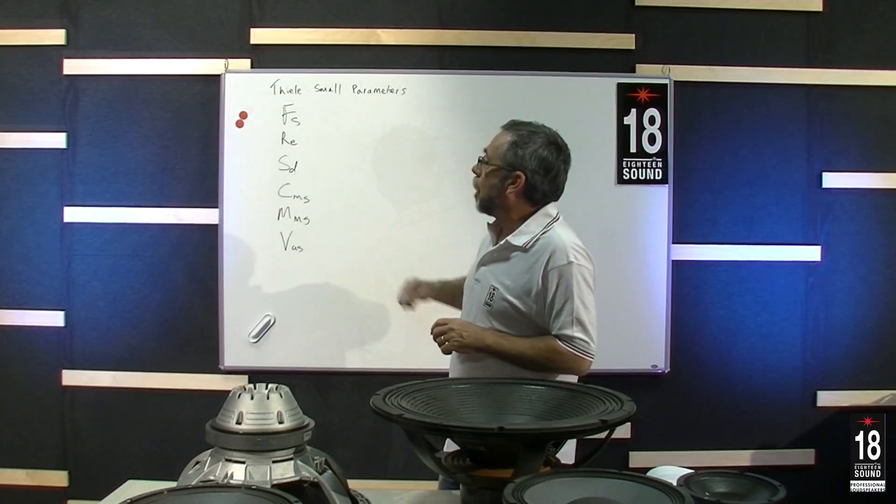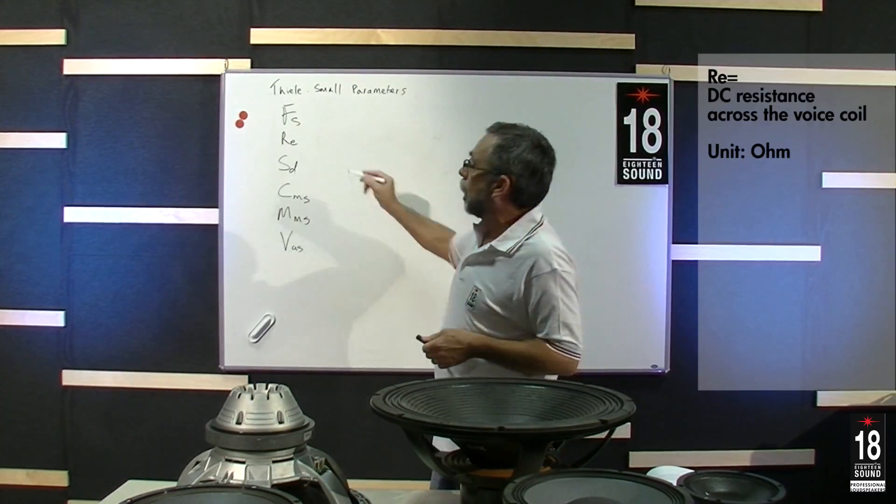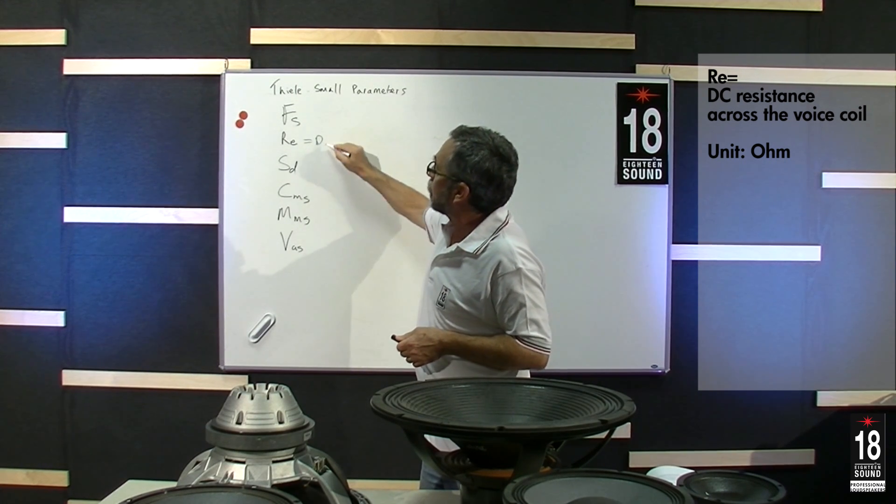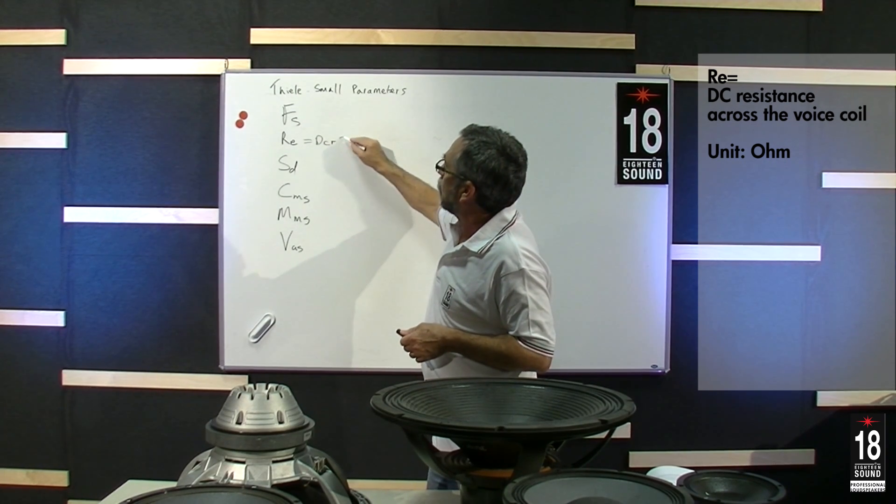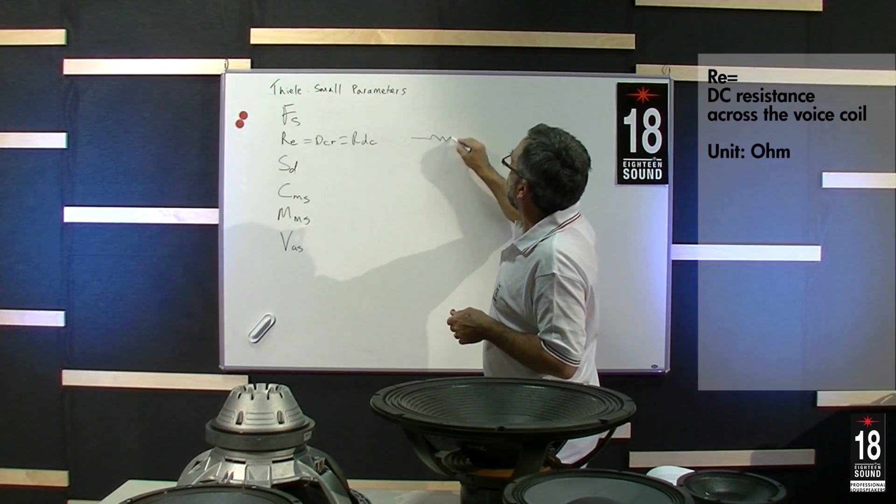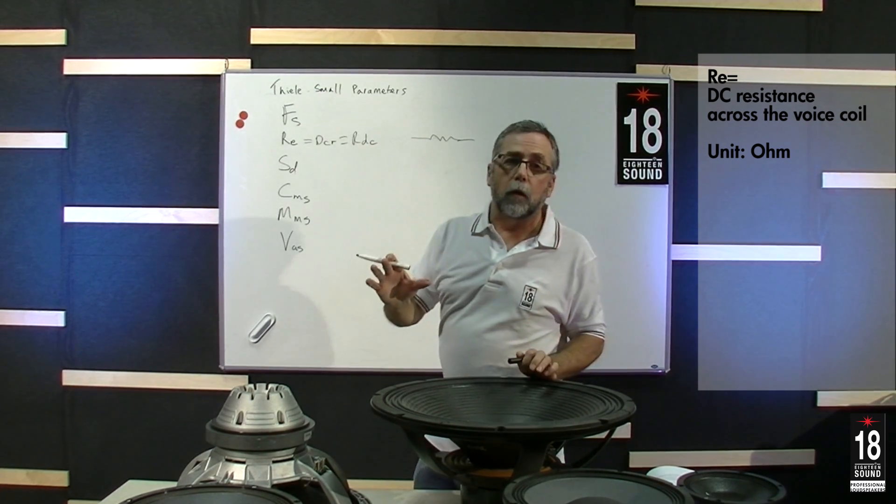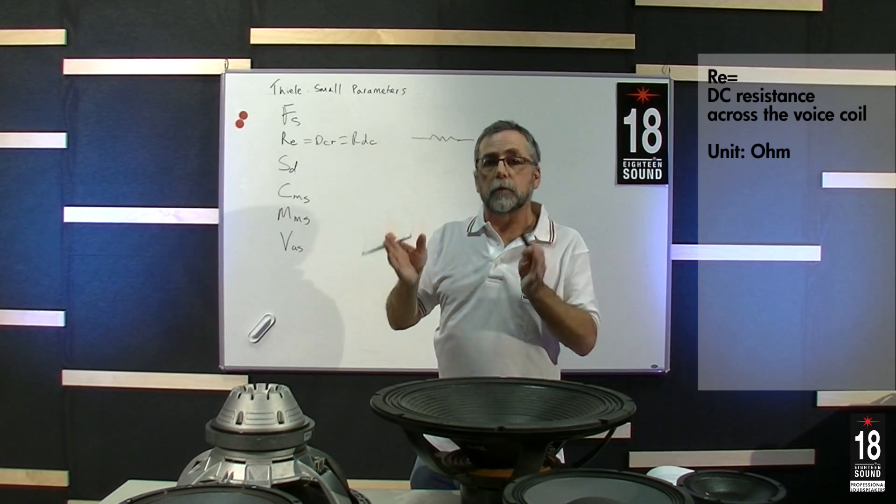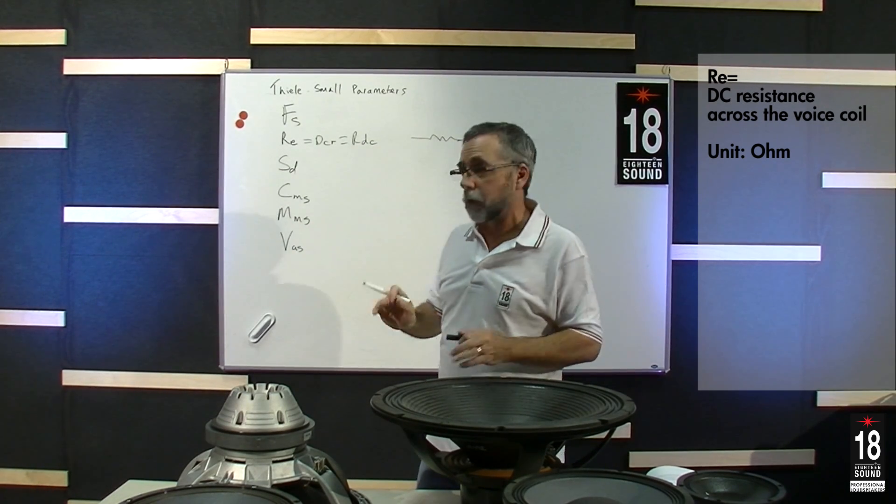Next is RE. This is the DC resistance of the voice coil. It is sometimes written on a spec sheet as DCR or RDC. And it is simply thinking of the voice coil as a resistor. It is just a measurement of the DC resistance across the coil.